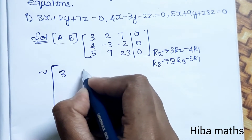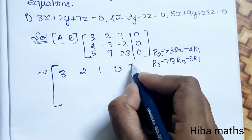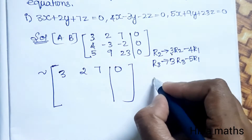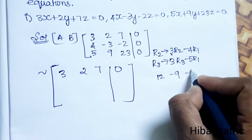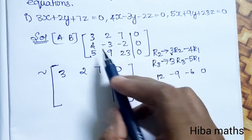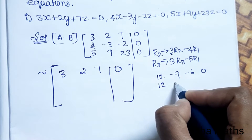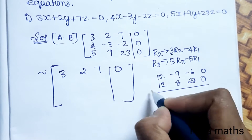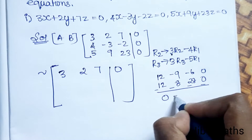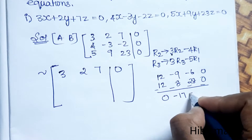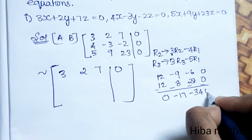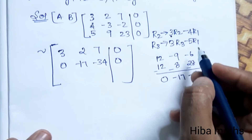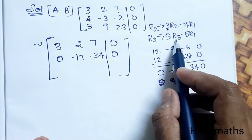The first row remains unchanged. For the new R2: 3×4=12, 3×3=9, 3×2=6; minus 4×3=12, 4×2=8, 4×7=28. This gives 0, -17, -34, 0. For R3 similarly we get 0, 0, -17, -34, 0.